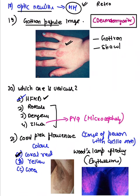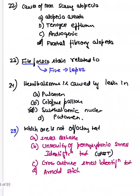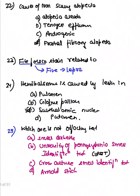An axilla image was shown with coral pink to coral red fluorescence — this is erythrasma. They asked the Wood's lamp finding. They also asked which condition causes non-scarring alopecia. The full table of scarring and non-scarring alopecia is covered in the dermatology rapid revision video.